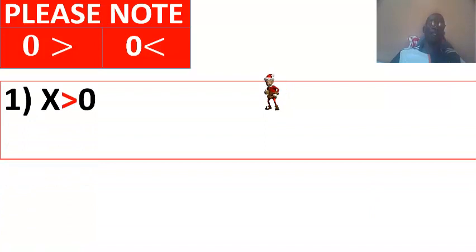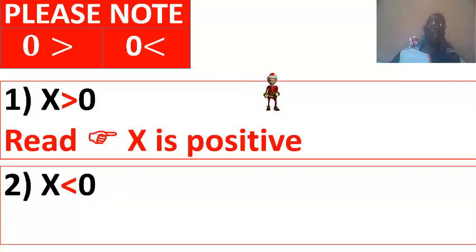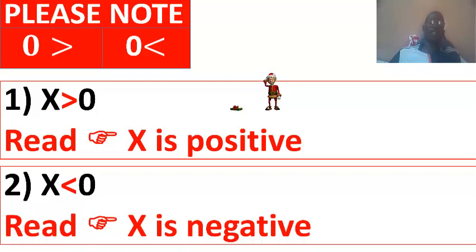Please note. If you have X is superior to 0, it means that X is positive, so X is positive. Because all numbers that are superior to 0 are normally positive. In the other case, X is inferior to 0, you say X is negative. So everything that is inferior to 0 is normally negative, so you say X is negative.